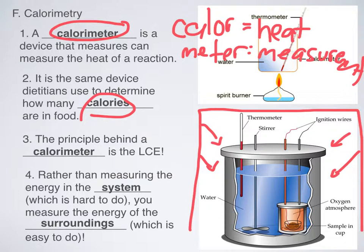Now, the principle behind a calorimeter is the law of conservation of energy. So the idea is that instead of measuring how much energy is directly in a food, and so the food would be like our system, it's really hard to do that. For example, let's say that we had like a double-double with cheese or something from In-N-Out, and we wanted to know how many calories were in it.